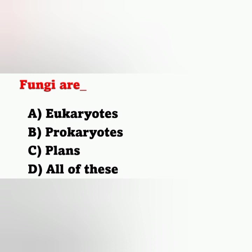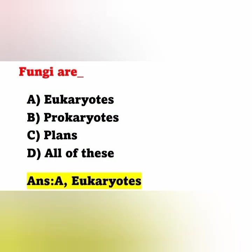Next question: fungi are — Option A: eukaryotes. Option B: prokaryotes. Option C: plants. Option D: all of these. Fungi are examples of eukaryotic organisms. They have a rigid cell wall, a nucleus with a nuclear membrane, and reproduce by asexual or sexual methods. Option A is the correct answer.